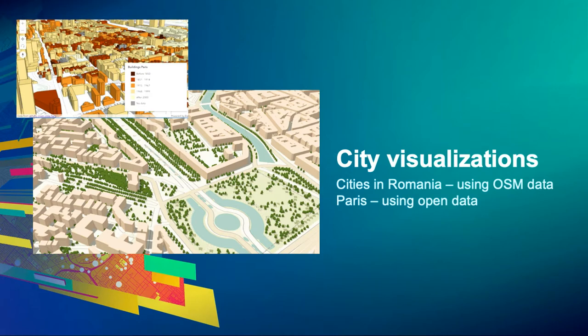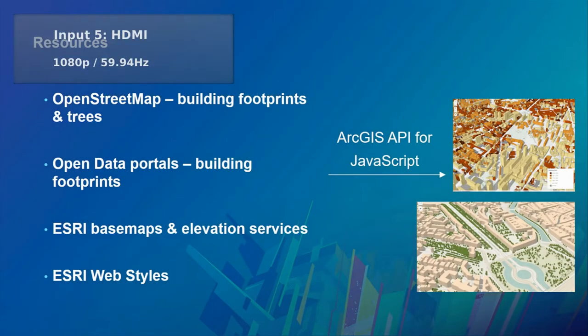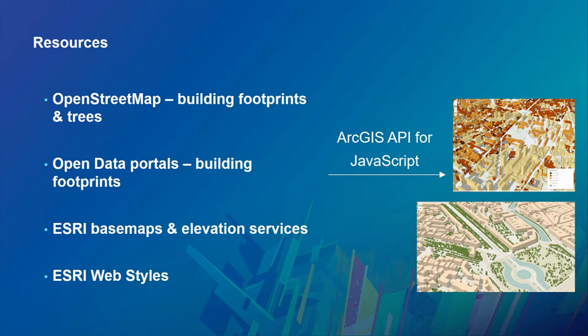For Romania I used OpenStreetMap — I took building footprints from OSM and also tree data, since they have trees mapped as points. For Paris I went to the open data portal and downloaded the building footprints there. Esri provides a series of basemaps and an elevation service for the whole world that you can access. Last but not least, we're going to look into web styles, which provide symbols in 2D but also 3D models you can use in your data. We publish them as web styles and they're there for you to use out of the box.